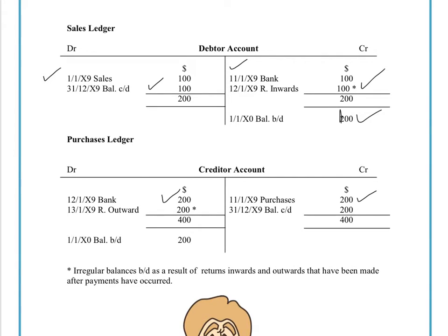But then we decide that we are going to return outwards $200 — perhaps they didn't work or there was a fault with them. We would obviously credit our returns outwards and debit our creditor account. And until our creditor gives us back the money, we're going to have a balance carried down of 200 and brought down on the debit side of 200. As you can see, in the creditor account, a balance brought down on the debit side is very, very unusual — the result of basically a delay in time before our creditors give us the money back.